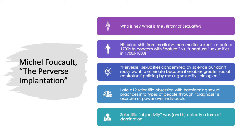Michel Foucault was a French philosopher and historian primarily interested in examining power and the history of power, and how power affects society. That is something he does in 'The History of Sexuality,' which is about the 1700s and 1800s and the different ways in which new ideas of sexuality that arose during that time functioned as a form of power over the general population.